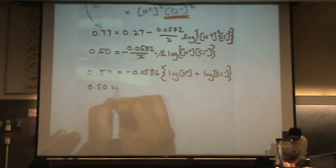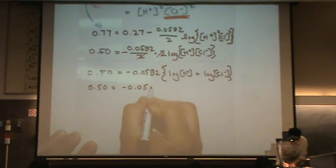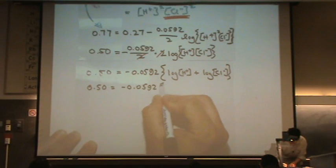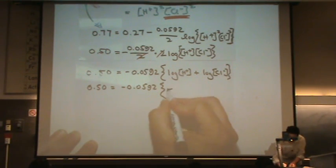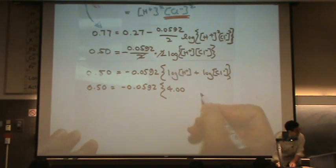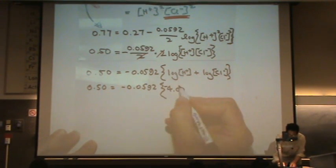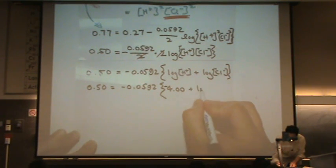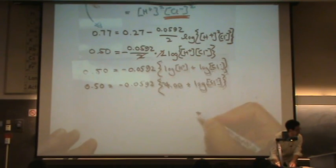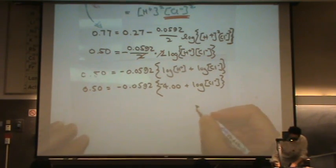0.50 equals negative 0.0592. What is the log of H plus? 4, that's the pH. And it would be negative because pH is negative log H plus, plus the log of CL minus. And from here I solve for CL minus.